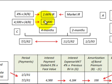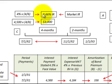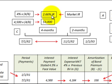Our interest payment is based on the $4,500 semiannual payment on the stated rate — 4.5% times the $100,000 face value. We take four-sixths of that, or four months, and get $3,000. We also calculate our market rate of interest: 4% semiannual, and four-sixths of that gives us 2.66%.